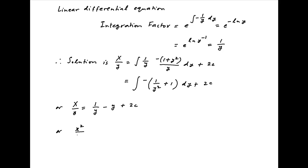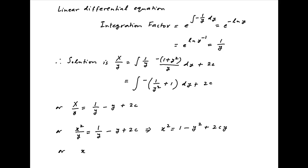Replacing capital X with x square, we get x square upon y is equal to 1 upon y minus y plus 2c. Multiplying both sides by y gives x square is equal to 1 minus y square plus 2cy, which can be rewritten as x square plus y square minus 2cy is equal to 1.